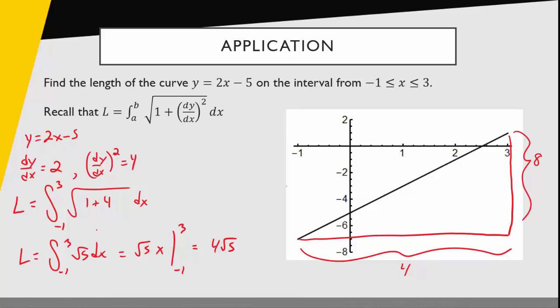it looks like negative 7 to positive 1, so that has a height of 8. And so the arc length in this case should be the square root of 8 squared plus 4 squared, or the square root of 64 plus 16, the square root of 80. And 80 we can actually break down as the square root of 16 times 5, and so this looks like it's 4 times root 5, the exact value we had before.